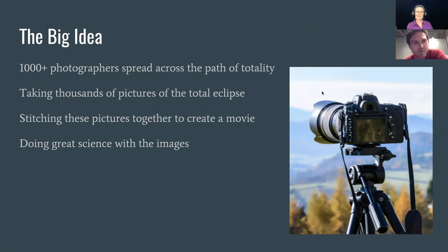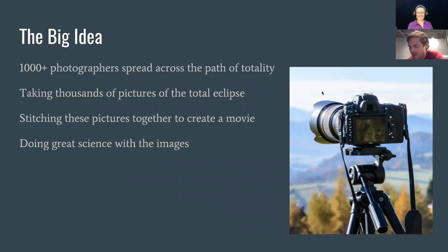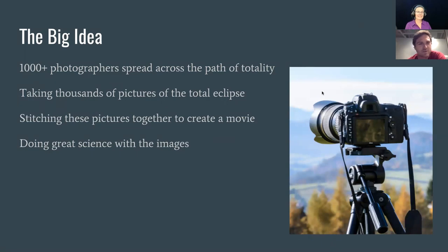As many of you know, we are recruiting a thousand-plus photographers who will be spread all along the path of totality. The goal is to capture as many pictures as possible as the eclipse passes overhead. By taking each perspective all along the path of totality, we can stitch these together into a continuous view of the sun's corona. Rather than the two minutes we'll get from any one location on Earth, we'll have images of the whole hour and a half it takes across the U.S.